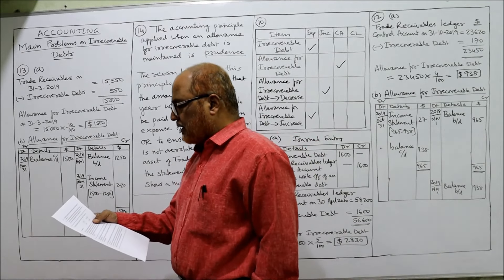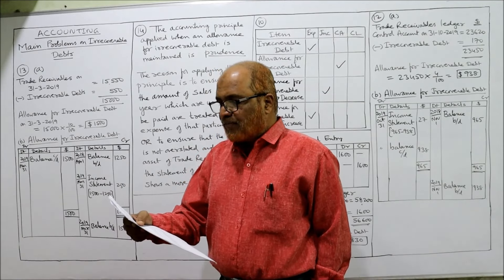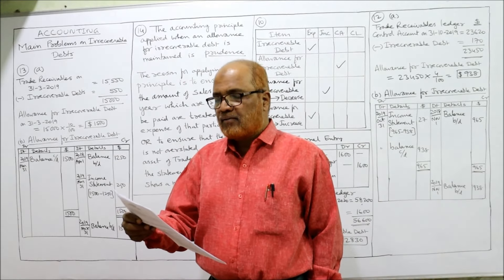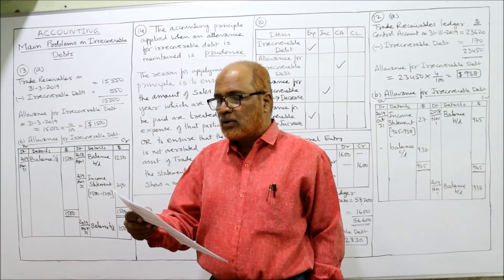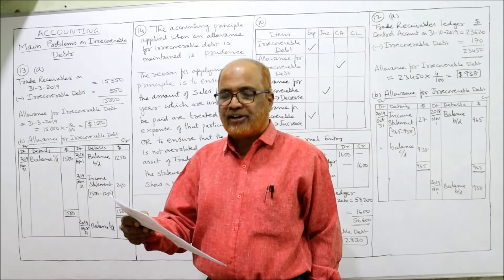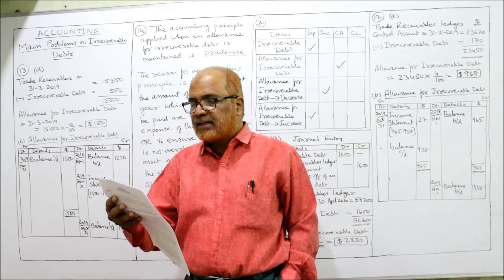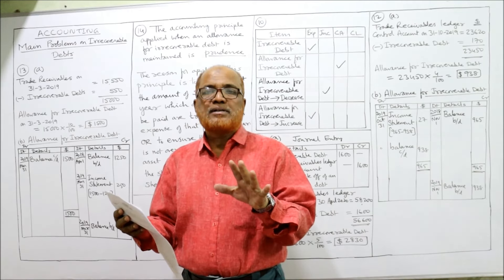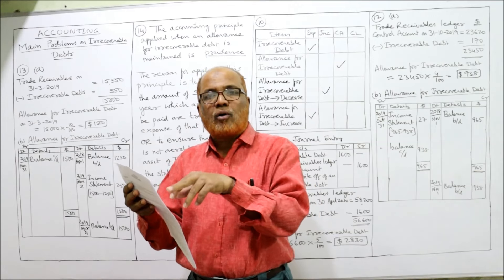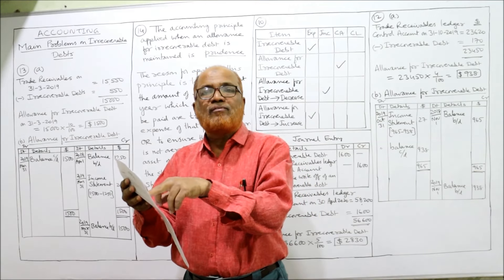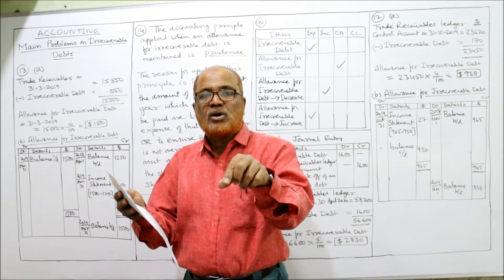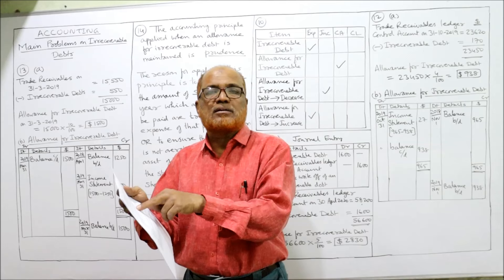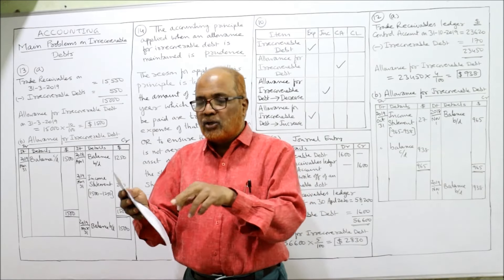Neha provided the following information for the year ending 31st March 2019. From 1st April 2018 to 31st March 2019 — beginning and end of the year. Trade receivables: beginning of the year $12,500, end of the year $15,550. Neha maintains an allowance for irrecoverable debt at 10% of trade receivables. So beginning of the year, $12,500 into 10% — that is 12,500 × 10/100 — gives you $1,250.